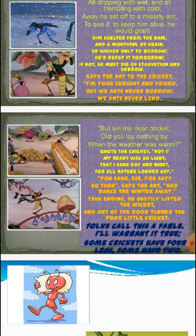Now the cricket reaches the ant's house and asks about shelter and food and grain. The ants say: 'You are our servant or our friend, but we never borrow anything and we never lend anything. We never take anything from other people and we never give anything to other people either. This means we don't like to give anything and we don't like to take anything from others.'